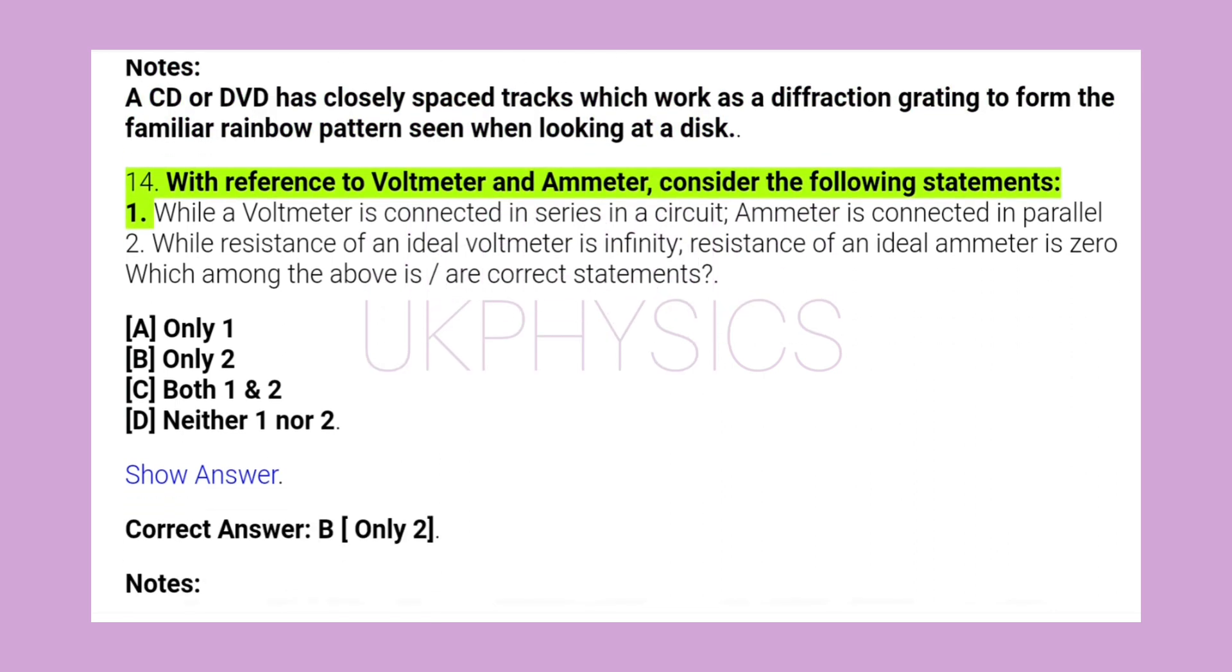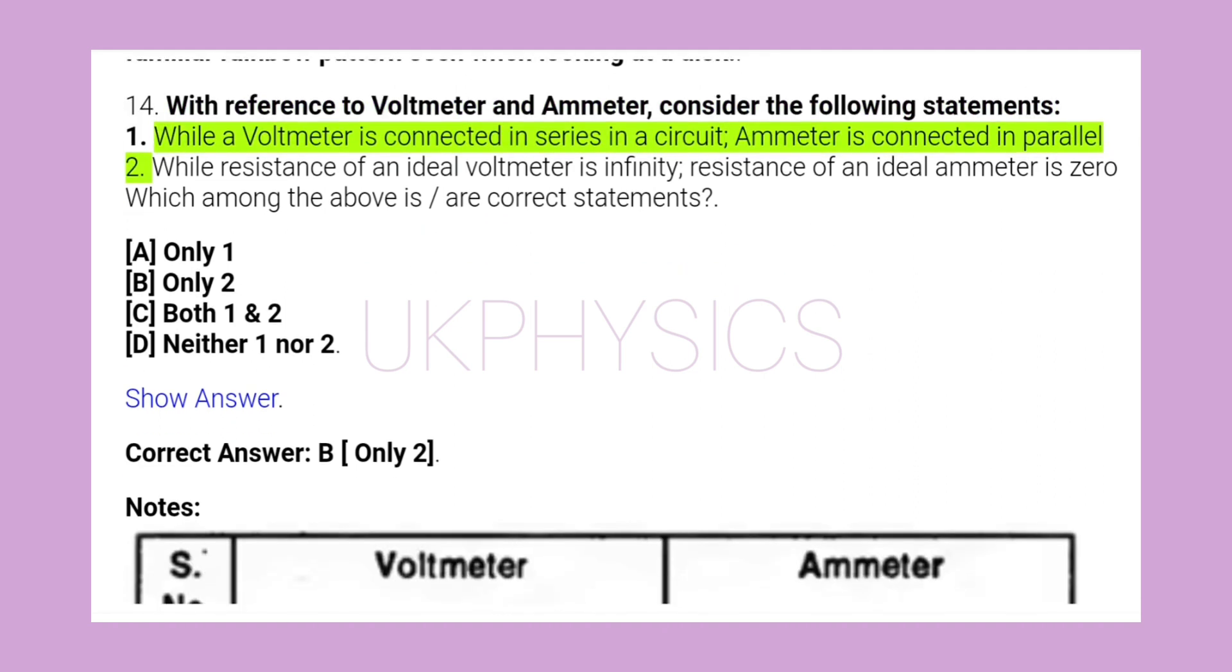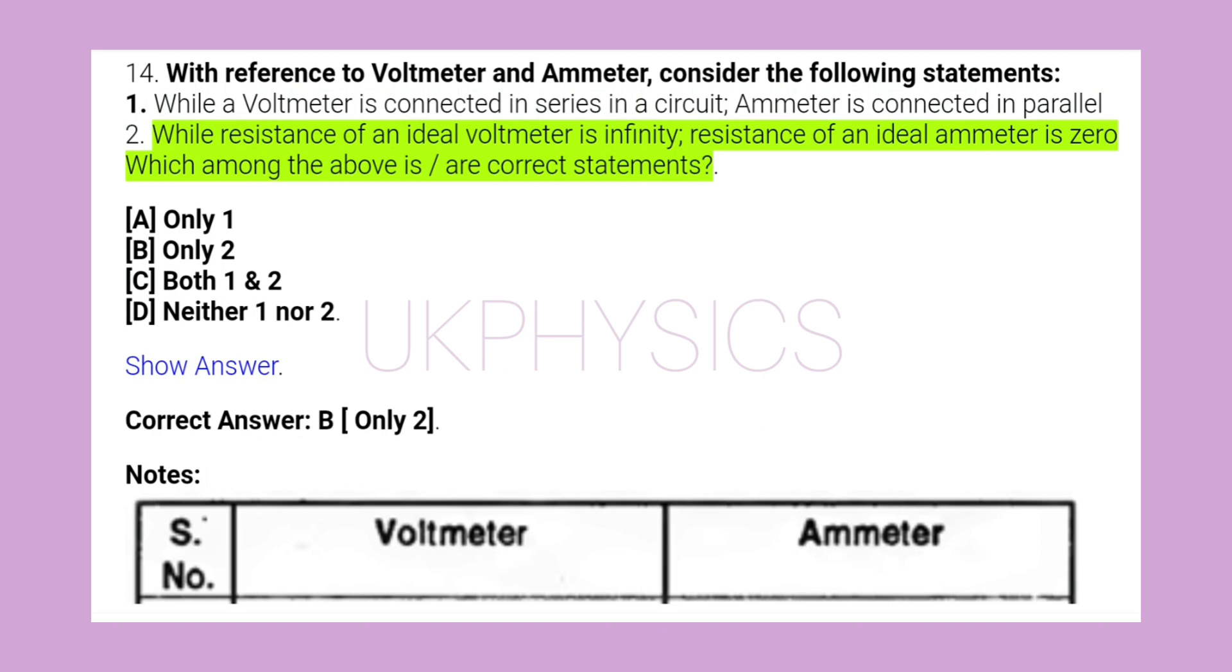14. With reference to voltmeter and ammeter, consider the following statements. 1. While a voltmeter is connected in series in a circuit, ammeter is connected in parallel. 2. While resistance of an ideal voltmeter is infinity, resistance of an ideal ammeter is 0. Which among the above is or are correct statements?